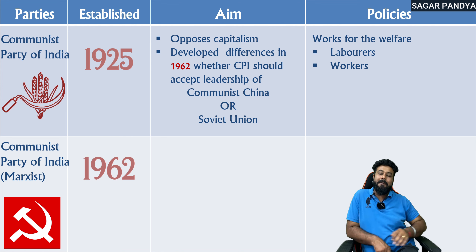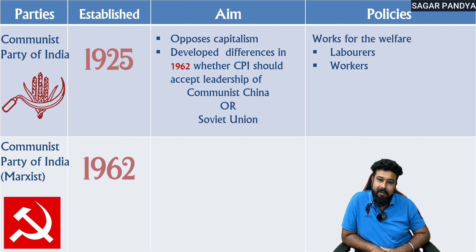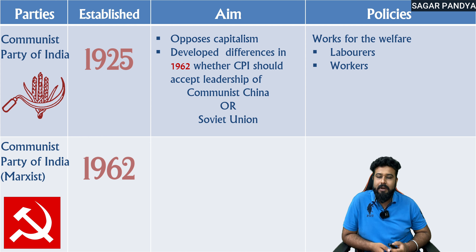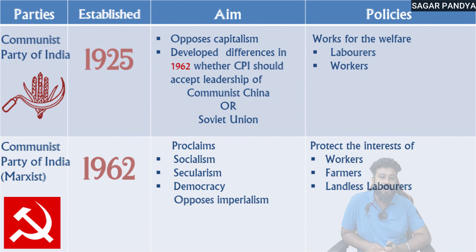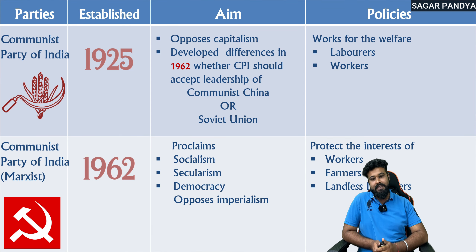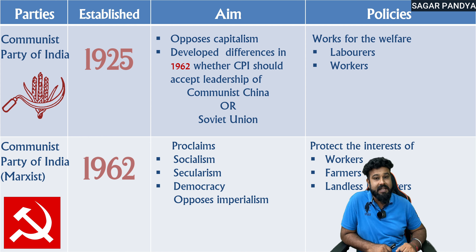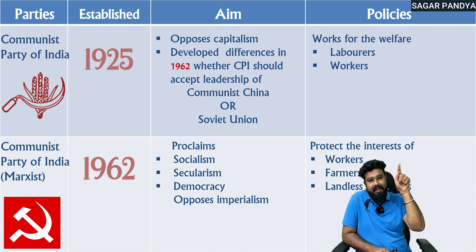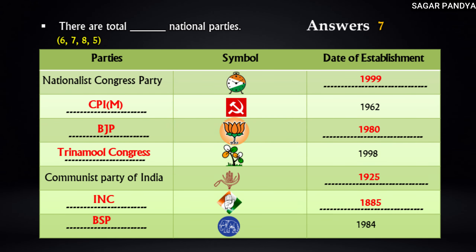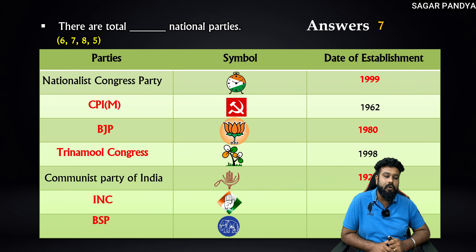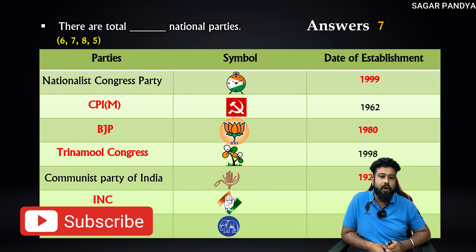In 1962, an internal split in the Communist Party of India occurred over whether to follow Chinese or Soviet Russian communism. This led to the formation of Communist Party of India (Marxist). CPI(M) proclaims socialism, secularism, and democracy, and opposes imperialism. It works for the protection of the interests of workers, farmers, and landless labourers. Their logo also features a hammer and sickle. This is an important table for the exam — take a screenshot — as logo identification and wrong-pair questions can be asked.